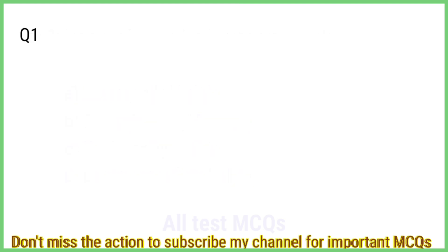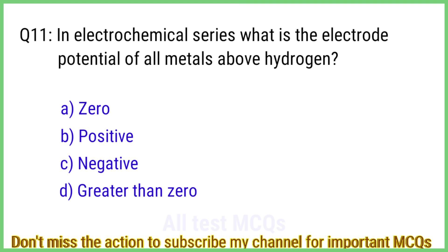Question number 11. In the electrochemical series, what is the electrode potential of all metals above hydrogen? The right answer is option C: Negative.